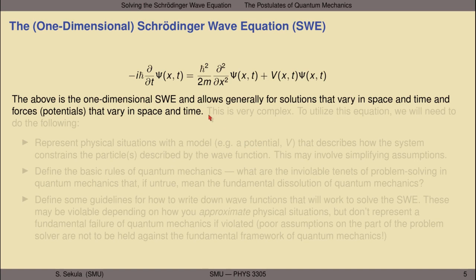Let me remind you about the one-dimensional Schrödinger wave equation, which I will represent using the shorthand SWE going forward. The SWE has a time-dependent statement on the left, a spatially dependent statement about the wave function on the right, and a portion that describes the action of an external force on the particle represented by the wave function. Generally, it allows for solutions that vary in space and time, and also allows for forces represented by an underlying potential that varies in space and time.